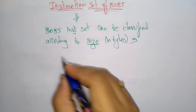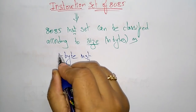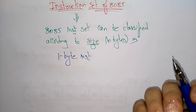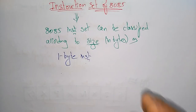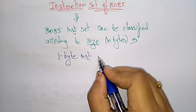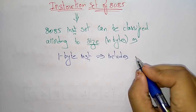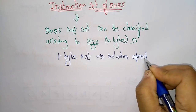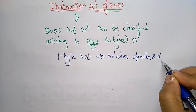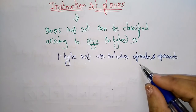First is one byte — you can store one byte of instruction. One byte means eight bits, so eight bits of data can be stored at a time. The ALU can perform eight bits of data at a time. One byte of instruction includes the opcode — the operation to be performed — and the operands, which are nothing but the registers or variables, all in the same byte.